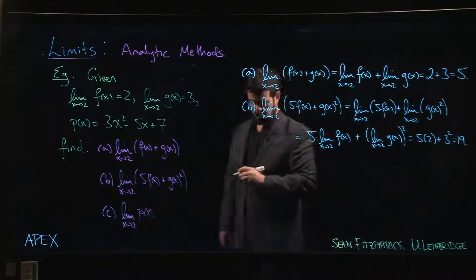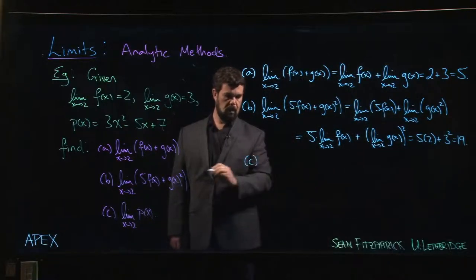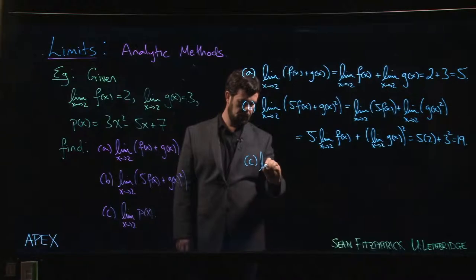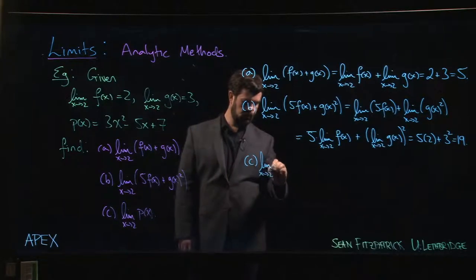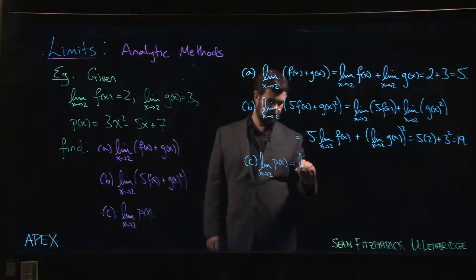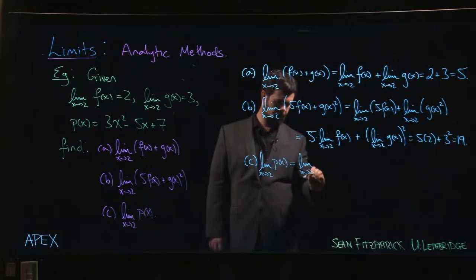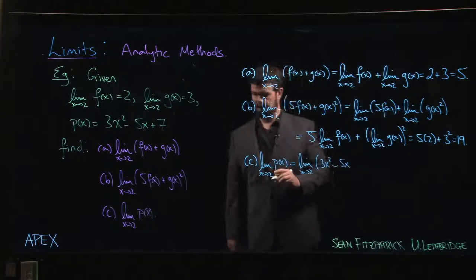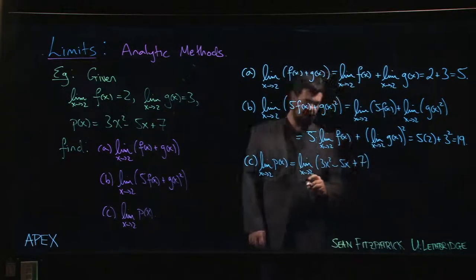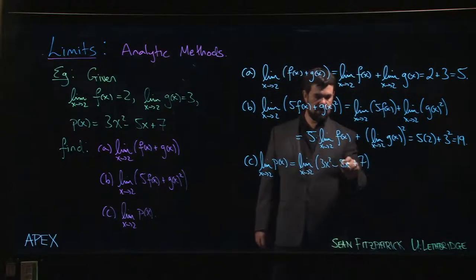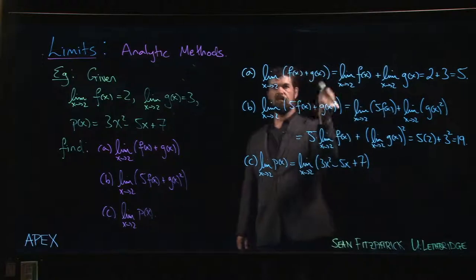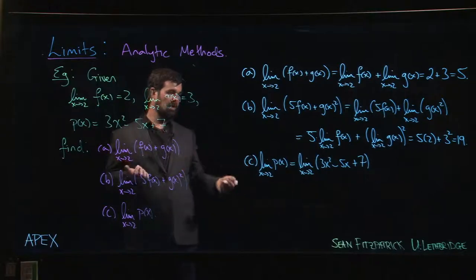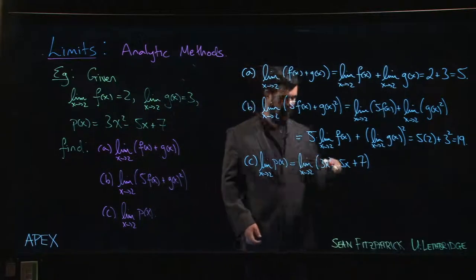Now for this last one, p(x) is given as this polynomial function, so we have the limit as x goes to 2 of p(x) is the limit as x goes to 2 of 3x² - 5x + 7. Here we've got three terms, but you can sort of inductively apply this sum rule to two, three, or more terms. Essentially using associativity of addition, you can work out that it doesn't matter how many terms you're adding—you can take the limit term by term, and it doesn't matter if it's adding or subtracting.